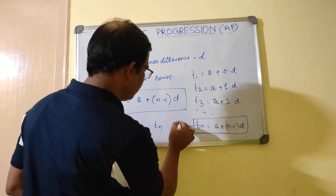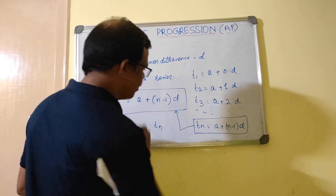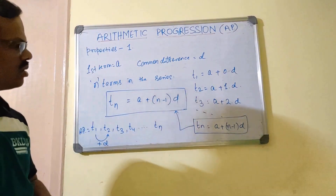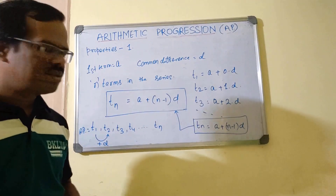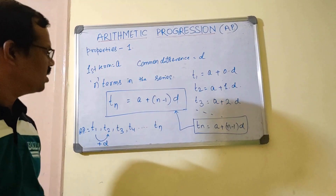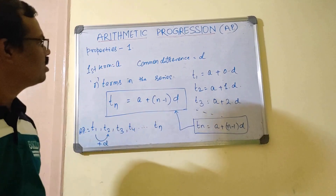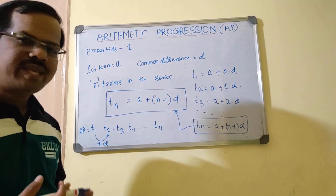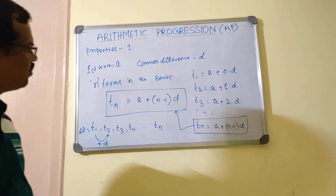So t-n equals a plus (n minus 1) into d. This is what I had written earlier — nothing complex, very easy to remember. We will now go to the second property.